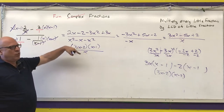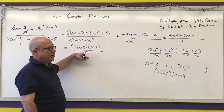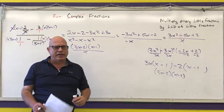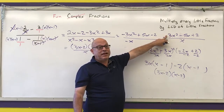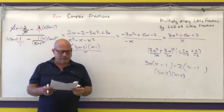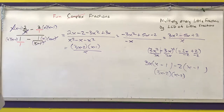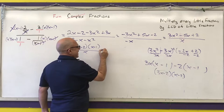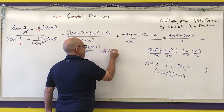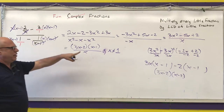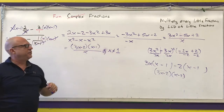The final answer for this one is 3x minus 2 times x minus 1, all over x. We keep it in factored form because this is likely an intermediate step to graphing, and I need factored form to find the zeros. Since I crossed off an x minus 1, I must state that x cannot equal positive 1, because if x were 1 I'd be dividing by 0 in that little fraction.